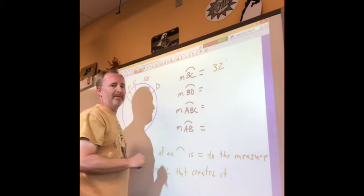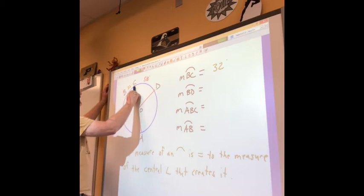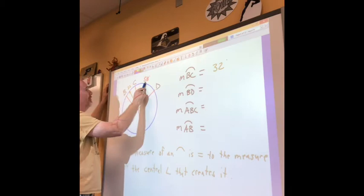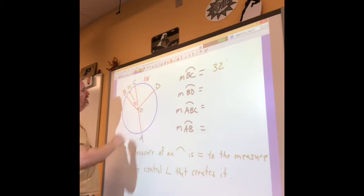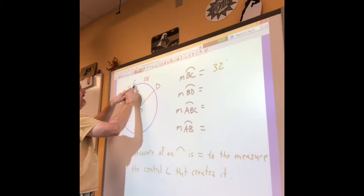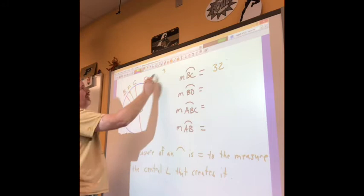All right, anybody want to take a shot at the measure of arc BD? Again, two letters is telling me it's got to be less than 180. Now BD is the BC that we just figured out plus this next guy who actually has a 58 on him. So that's helpful. We didn't need to transfer that number up there, it's already there.